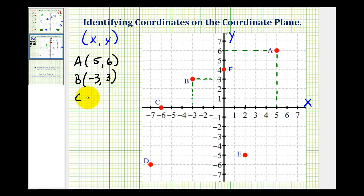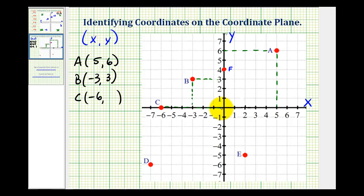Now point C is a little bit different. Notice how it lies on the x-axis, so we can see the x-coordinate is going to be negative six. And if we drew a segment straight to the y-axis, notice how it would intersect the y-axis right at zero. That's because this point does not move up or down from the x-axis, so the y-coordinate is zero.